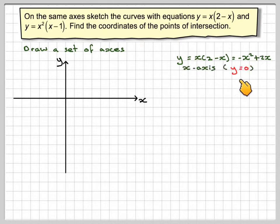So on the x-axis y = 0, which means that x(2-x) = 0. So x = 0, or 2 will make that bracket equal to 0, so x = 2. So plot those two points onto my graph.